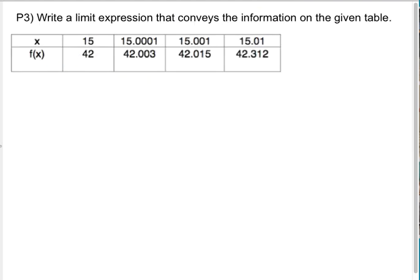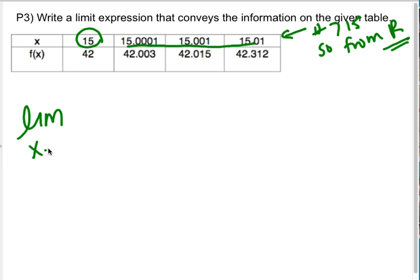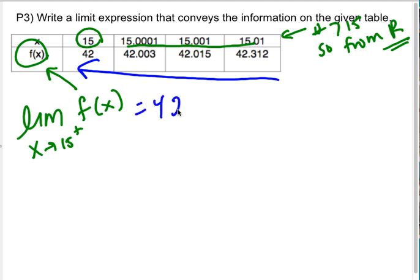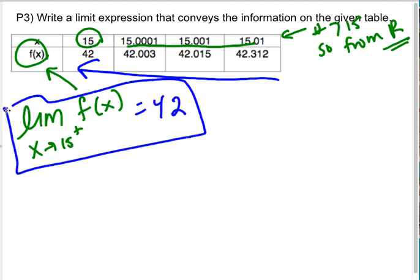Alright, so let's try the same thing. Write a limit expression that conveys this information. So it looks to me like 15 is the x that I'm looking at because these numbers are getting closer and closer to x. But if you look, they're slightly larger than x. These numbers are bigger than 15, so from the right. Numbers bigger than 15 would mean I'm approaching 15 from the right. So I want the limit as x approaches 15 from the right of f(x). It's f(x) because it says f(x). And then if I look at what value they're actually approaching, as I come from the right, I seem to be approaching 42. So I have the limit as x approaches 15 from the right of f(x) gives me 42.